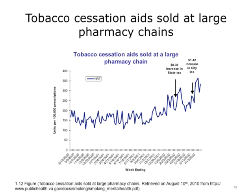Here is an example of what can be learned by monitoring tobacco cessation aids sold at large pharmaceutical chains. What you see here is the tracking of tobacco cessation aids following the increase of tax for cigarettes. It's clear from this chart that as tax increases, smoking cessation aids purchased at pharmacies also increase. The first increase in cessation aid purchases follows a 39-cent tax increase; the second follows the $1.42 tax increase. We are able to learn from these data that increasing the tax on cigarettes will also increase smoking cessation attempts.